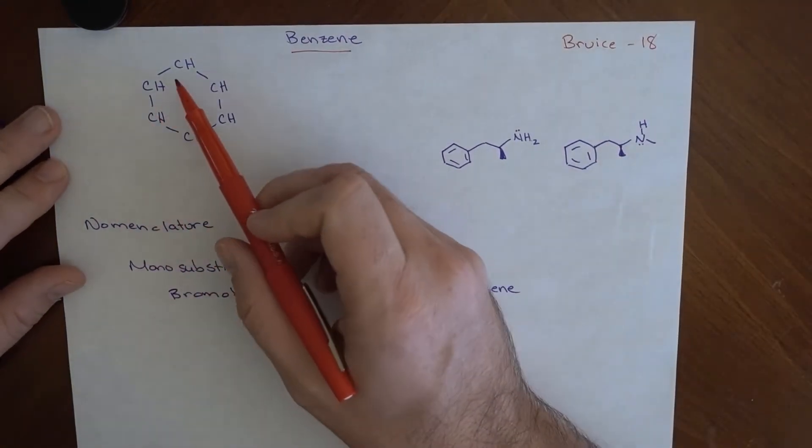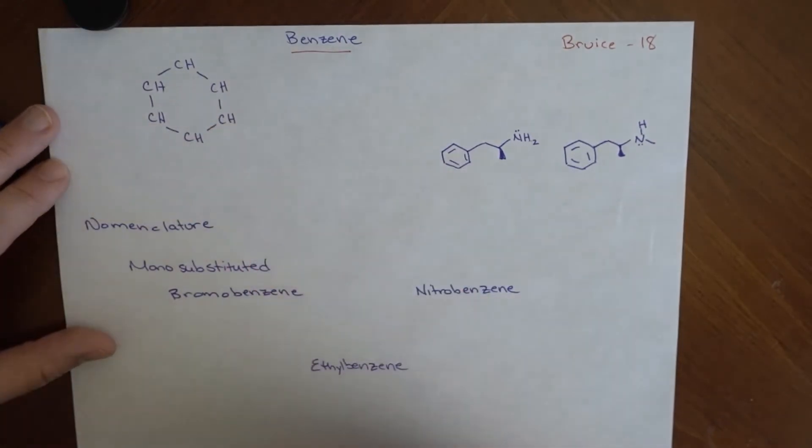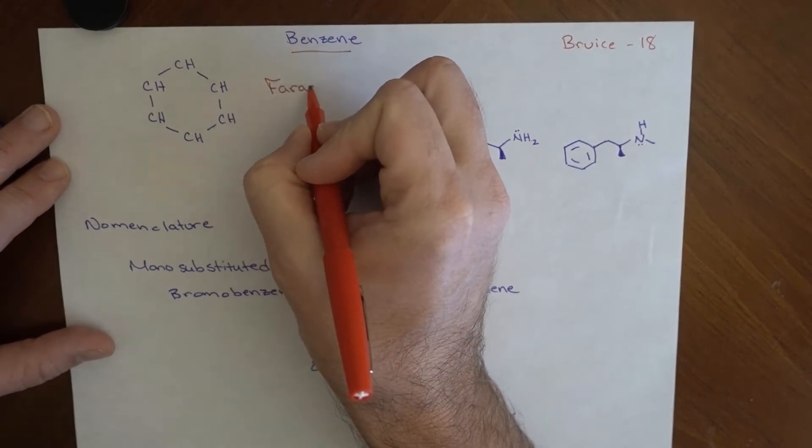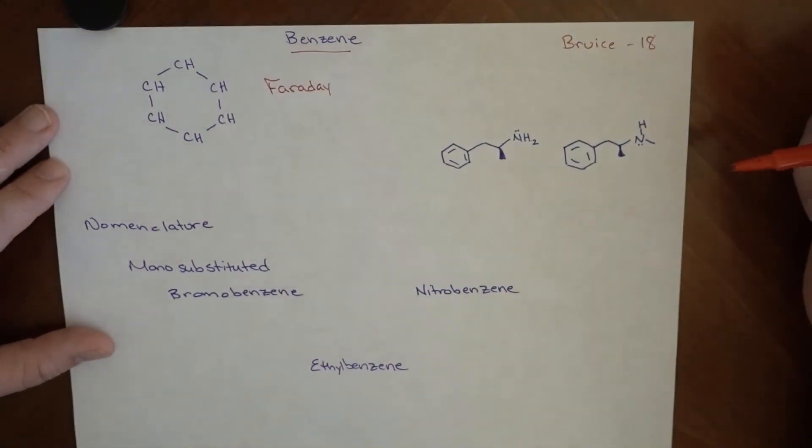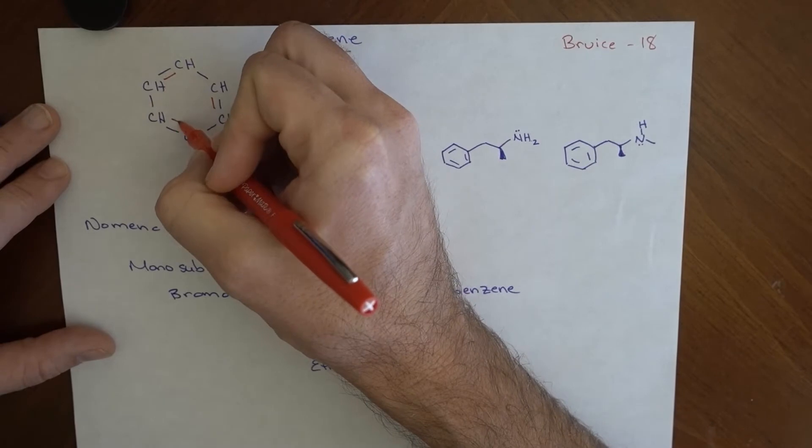So benzene was known to have 6 carbons and 6 hydrogens. Its exact structure was not necessarily known. So eventually, Faraday was one of the people who ended up isolating it. And then other chemists ended up working on getting its actual structure. And it was found to have a series of alternating double bonds.